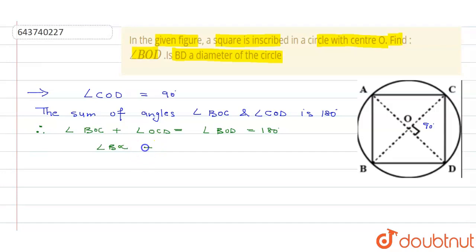Angle BOC plus 90 degrees is equal to 180 degrees, so angle BOC will come to 90 degrees.